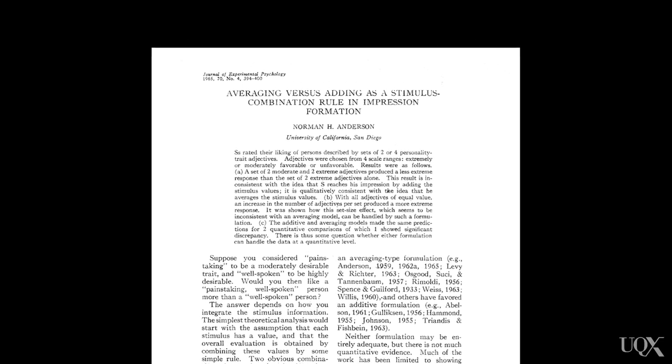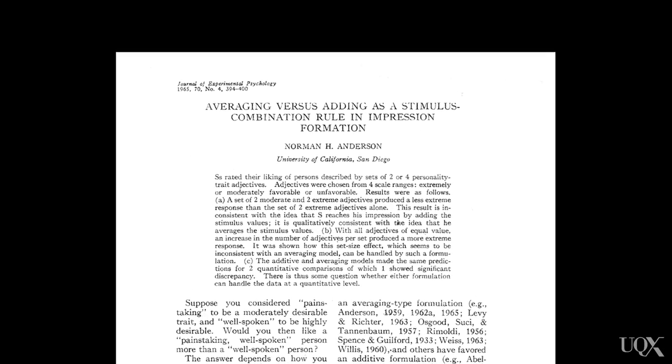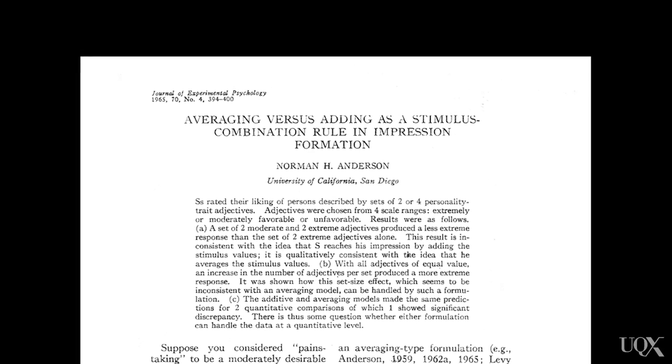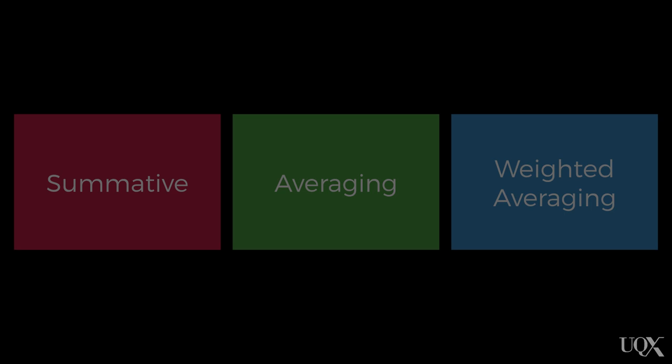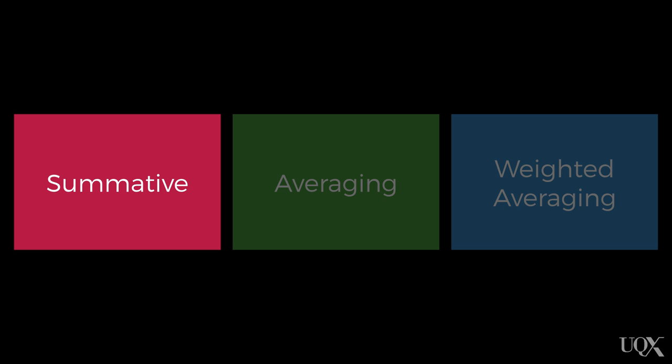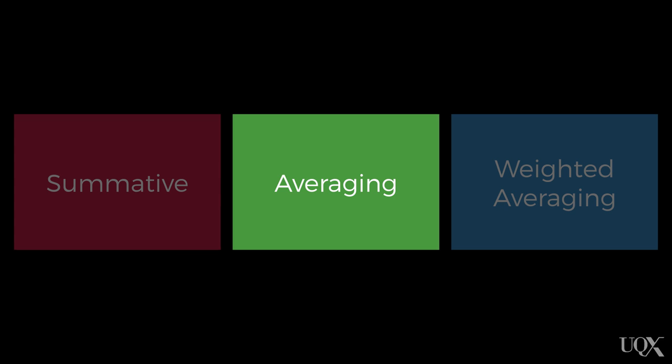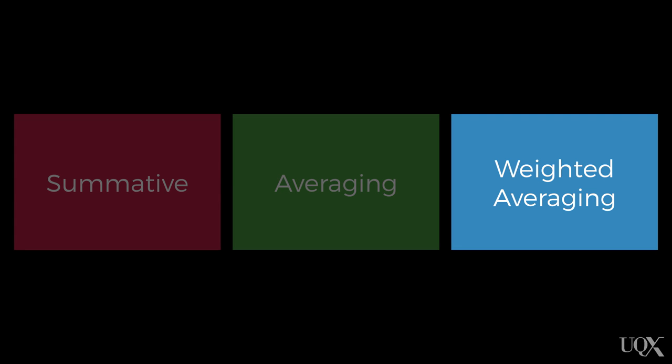Anderson was the main proponent of the algebraic models of impression formation. He thought that impressions were formed on the basis of the mechanical combination of information that we know about a person. Anderson proposed that there could be three different ways that this information could be combined: the summative model, the averaging model, and the weighted averaging model. To illustrate how these models work and the differences between them, let's consider an example.